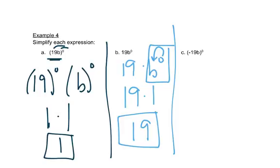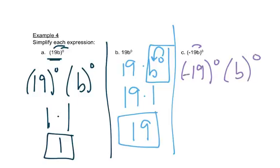Let's look at this. Again, we have two things inside the parentheses. The exponent of 0 goes to everything, like it did in part a. So negative 19 to the 0 power is still just 1, times b to the 0 power is 1. 1 times 1 is still 1.